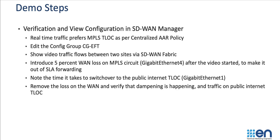We'll show the video traffic flowing through the sites, then introduce 5% loss on Gigabit Ethernet 4, the MPLS T-Lock, and verify that the traffic switchover happens. We'll also use simulate flows to confirm the traffic has moved to the public internet T-Lock. Then we'll remove the loss and verify that dampening is happening and the traffic still remains on the public internet T-Lock.